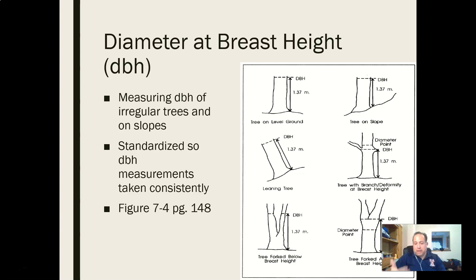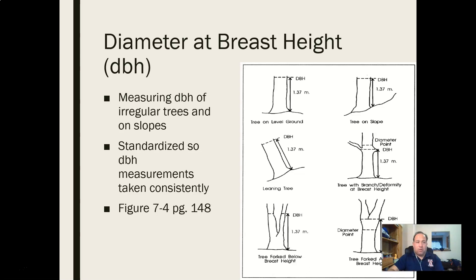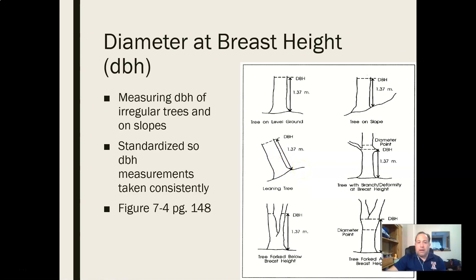We're trying to be consistent in our measurements to prevent bias. Is that measurement going to be perfectly accurate for a forked tree? Not really. But most of the time, that one tree is one out of thousands, or it's representative of a few trees out of a thousand. We don't need to worry too much, because there are so many other trees in the forest that one less-than-perfect measurement will average out and be acceptable overall.